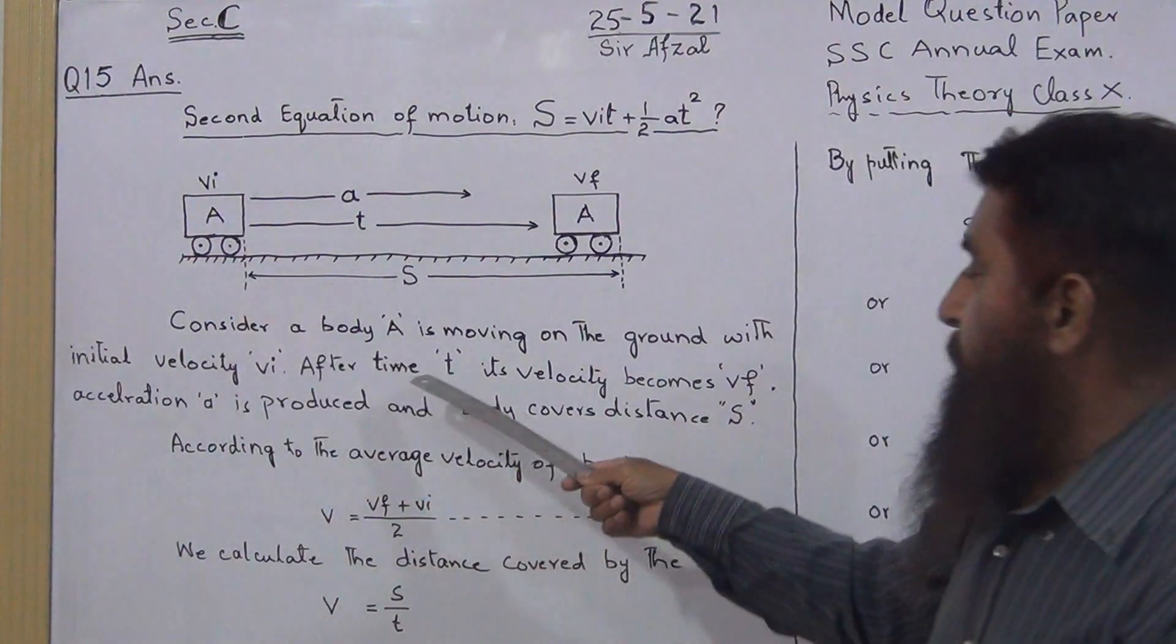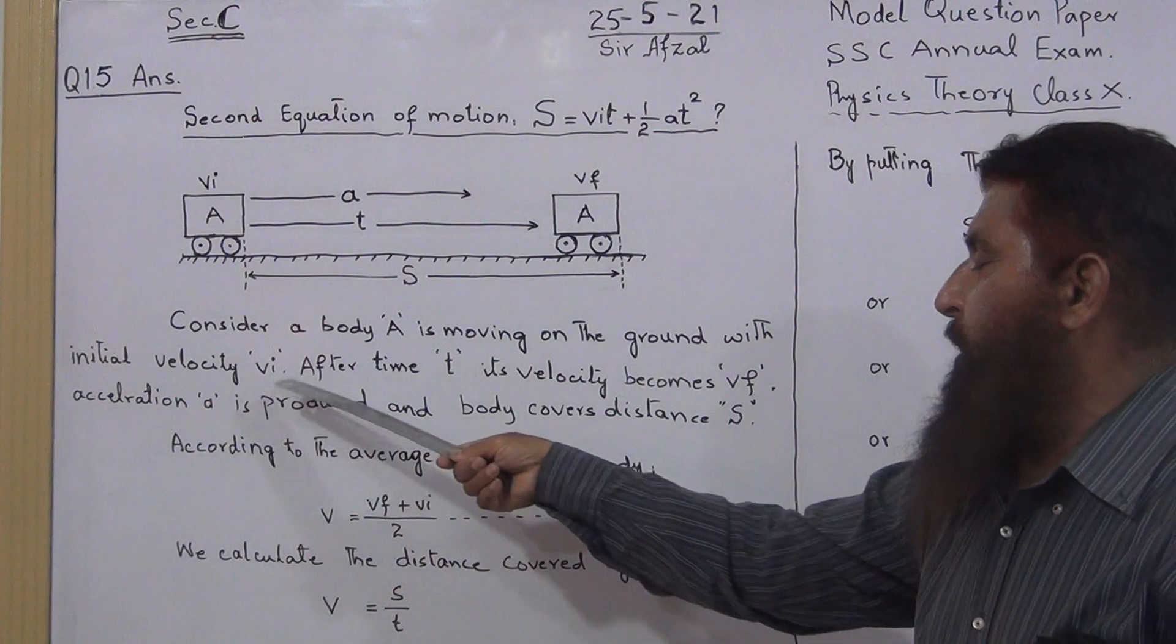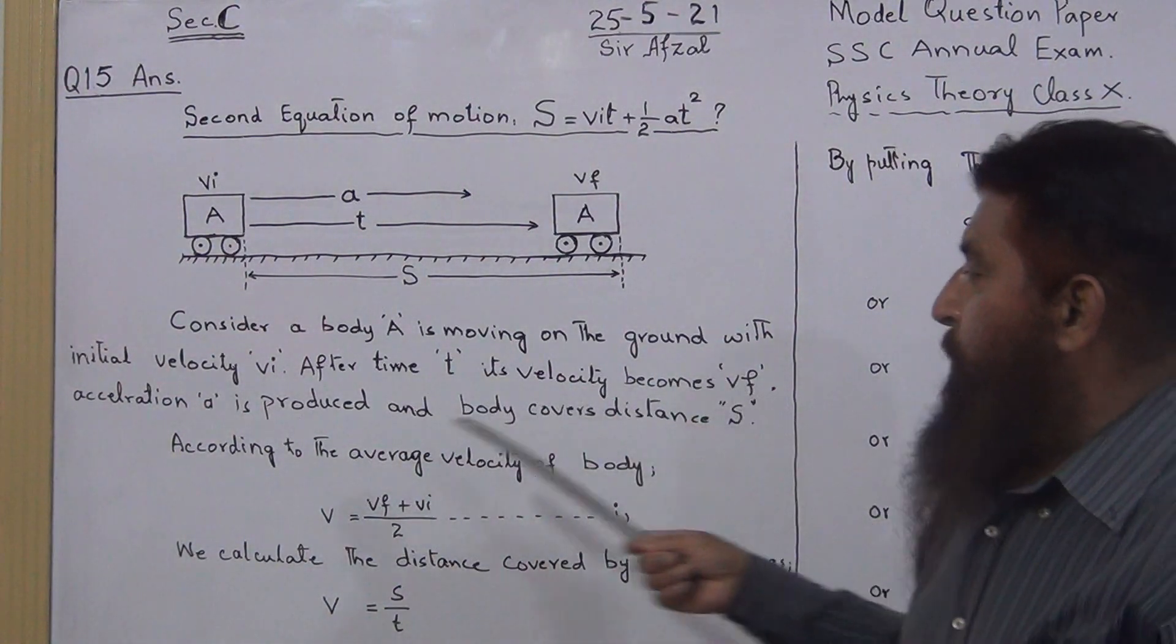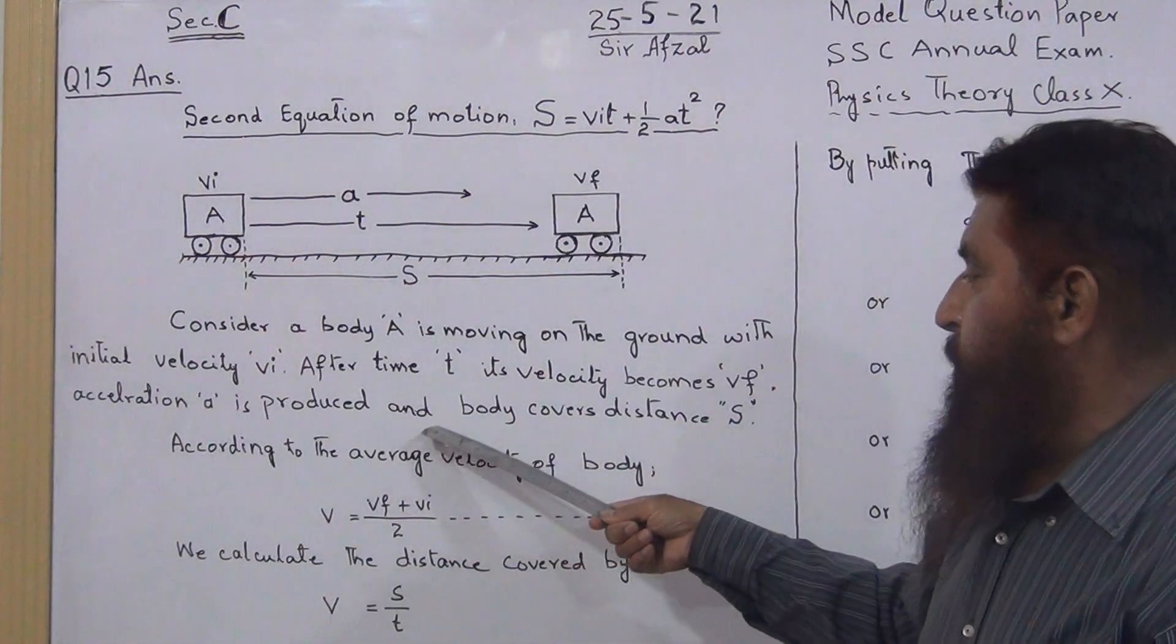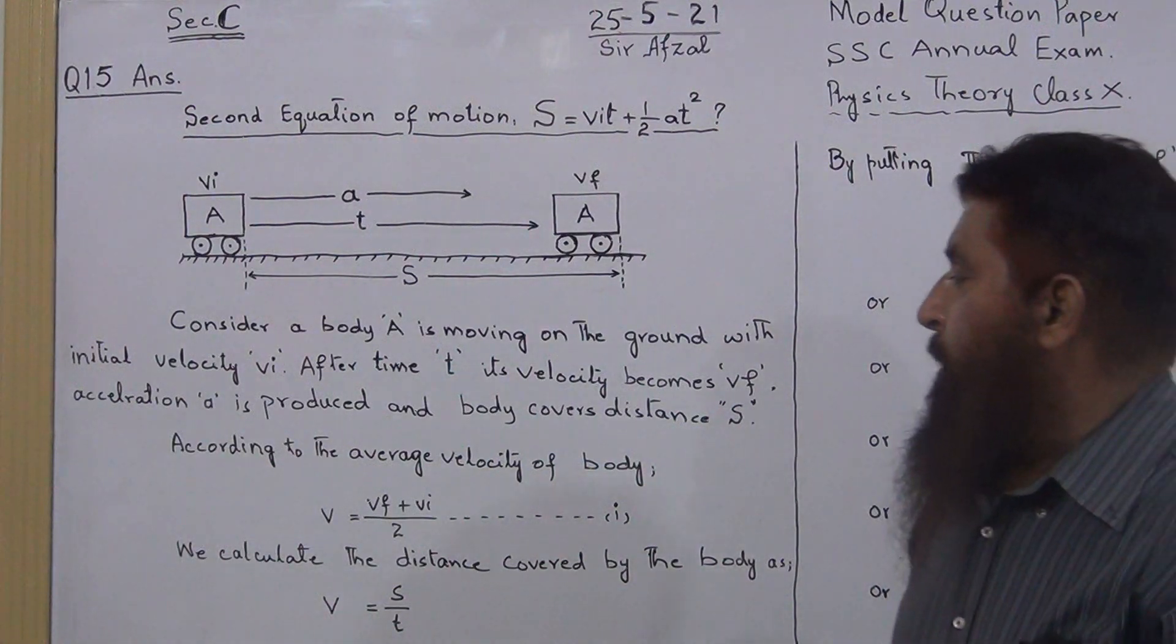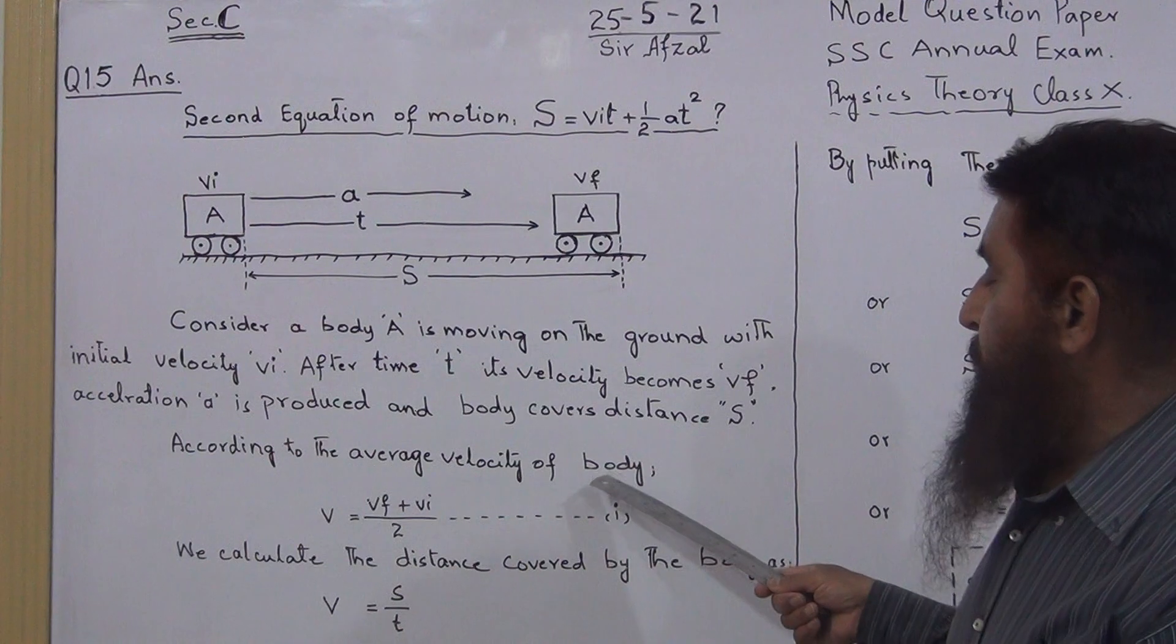You can describe it in simple words: Consider a body A is moving on the ground with initial velocity VI. After time T, its velocity becomes VF, acceleration A is produced, and body covers distance S.